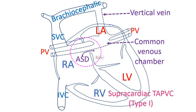When all the pulmonary veins join the right side of the heart instead of the left side, an atrial septal defect is needed to maintain life. Otherwise, the body will not get any oxygenated blood. Oxygenated blood returning from the lungs to the right side of the heart gets pumped back to the lungs.